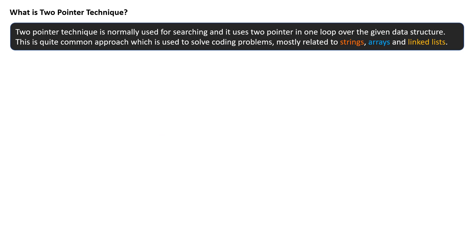What is two pointer technique? Two pointer technique is normally used for searching and it uses two pointers in one loop over the given data structure. This is a quite common technique which is used to solve coding interview problems mostly related to strings, arrays, and linked lists.